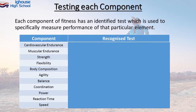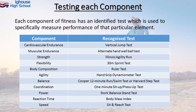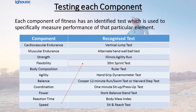Hopefully you are all familiar with the 11 components that are now on screen. What we're going to try and do here is see whether you can use your initiative to match the 11 components with the recognised tests that are now on screen. Some of these should be relatively straightforward — for example, speed would clearly be measured by using the 30 metre sprint test.